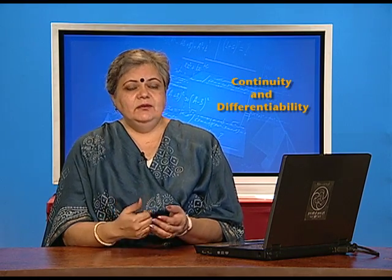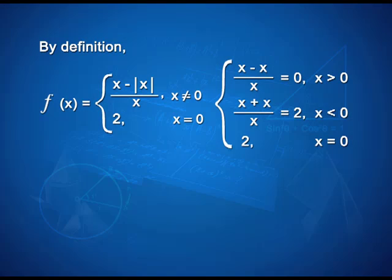So, keeping that in mind let us redefine our function and we have the function rewritten for x greater than 0 taking the value 0 because mod x is x, simplify and you get f(x) is equal to 0. When x is less than 0, mod x takes the value minus of x and therefore it all simplifies to 2. At x is equal to 0 the function takes the value 2.